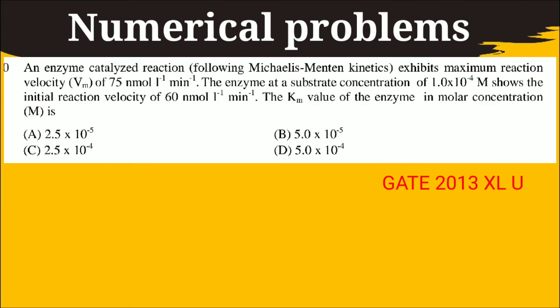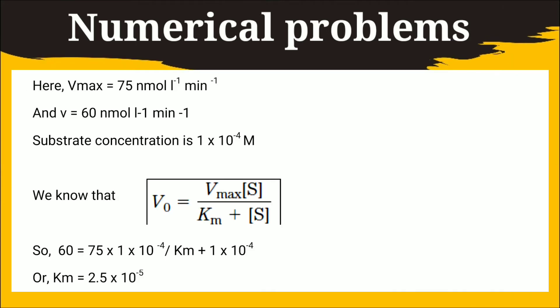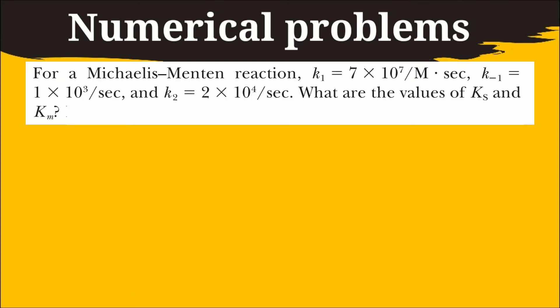In second type of problem the value of V0, Vmax and substrate concentration is provided. You have to calculate the value of Km. I have used Michaelis-Menten equation to solve this problem. But be careful. Sometimes the units are not the same for all the kinetic parameters. So before you start you have to convert them in this way. And the third type of problem is slightly different.